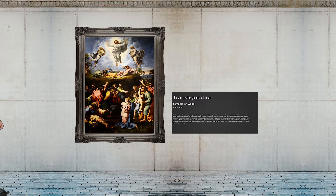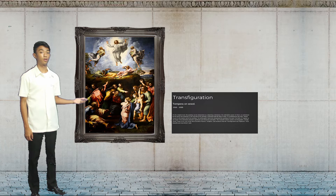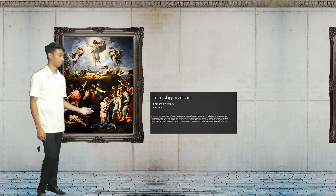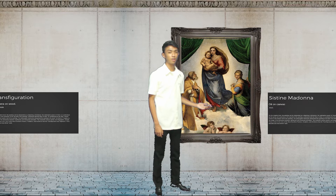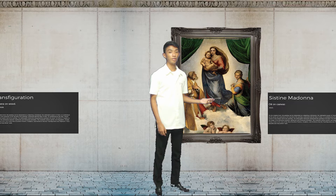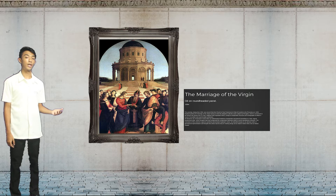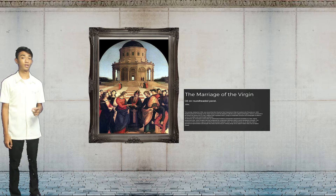Next is the Transfiguration, a tempera on wood painting. According to Giorgio Vasari, this painting is the most beautiful and most divine work of Raphael. Next is the Sistine Madonna, an oil on canvas painting. In Germany, this painting is most influential because it sparks a debate between art and religion. Next is the Marriage of the Virgin, an oil on a round-headed panel. Raphael intended the beauty of this painting as an abstract form of geometrical representation.